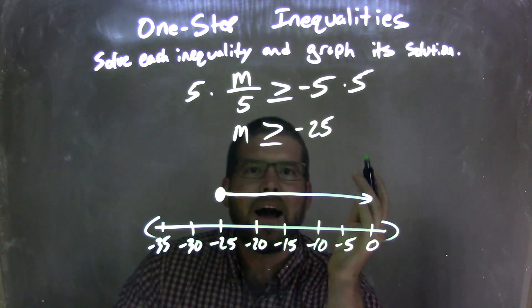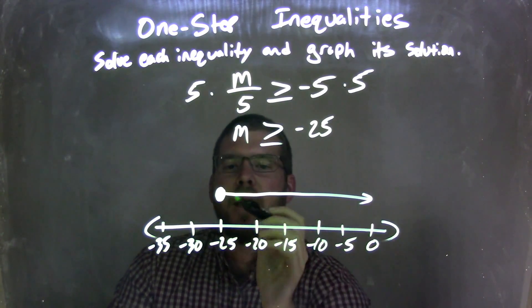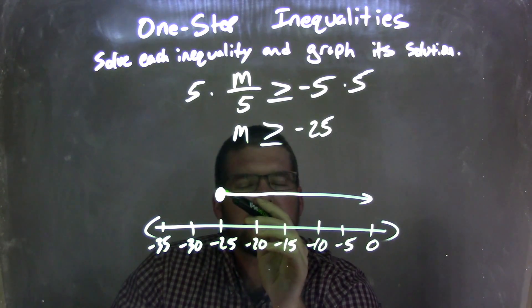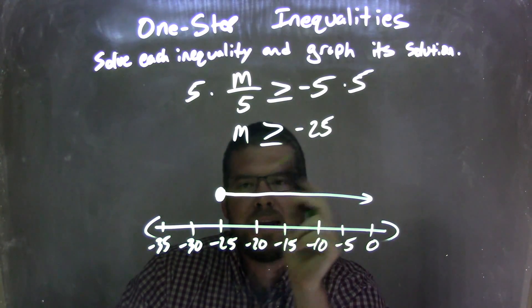From there, I had to make my graph. So I made the number line here. And at negative 25, I put a closed circle, showing that m can equal that negative 25.